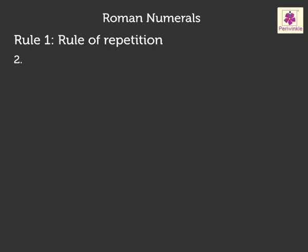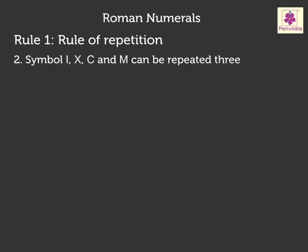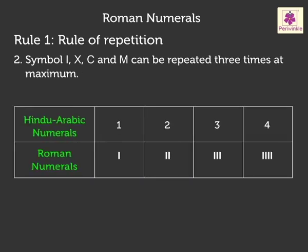The symbols I, X, C, and M can be repeated a maximum of three times. For example, we can write 1 as I, 2 as II, and 3 as III in the Roman system. But we cannot write 4 as IIII.